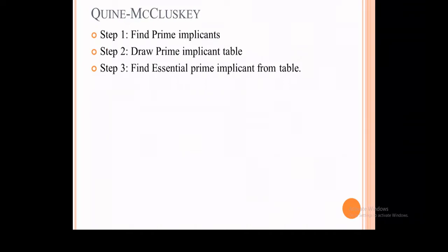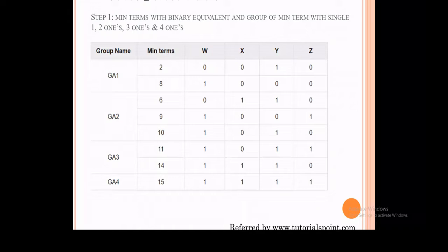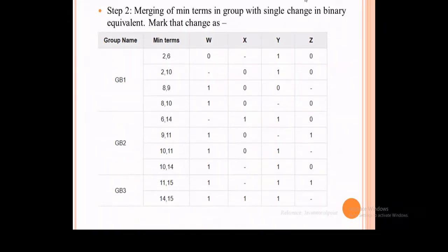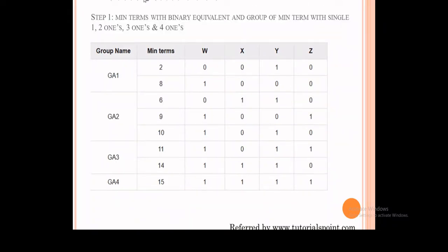There are three simple steps for this Quine-McCluskey method. First: find prime implicants. Second: draw the prime implicant table. Third: find the essential prime implicants from the table. We will see this through an example.